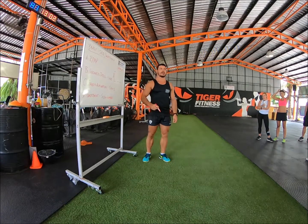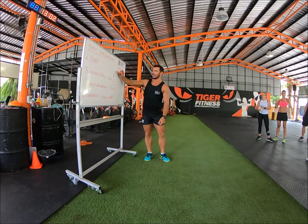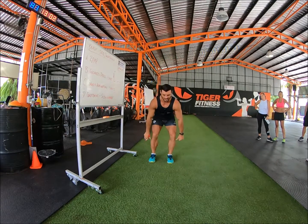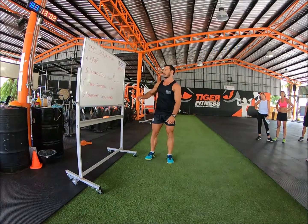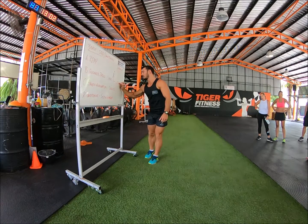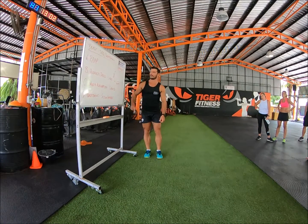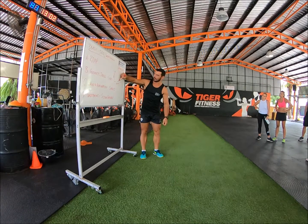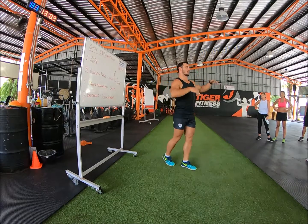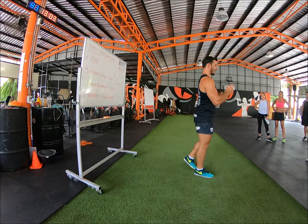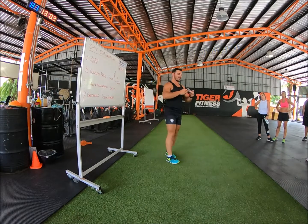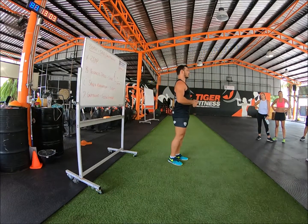Think strength. If I'm doing a one rep max deadlift, this is my magnitude of force. It's high amounts of force — it might be grinding strength. It's not going to be fast. Down this side here we have velocity — think speed. Strength here, speed here. Power is right in the middle there — combination of strength and speed. We'll be working on that on Thursday. But today we're working on velocity. This is how fast we can produce force.